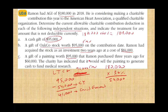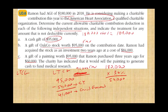Part C: a gift of a painting worth $95,000 that Ramon purchased three years ago for $60,000 — long-term capital gain. However, the American Heart Association has indicated it would sell the painting to generate cash to fund medical research. This is unrelated use by the charity. Because of this exception, we cannot use the fair market value — we must use the cost basis of $60,000 since the cost basis is lower. We must also keep in mind any applicable limitation.